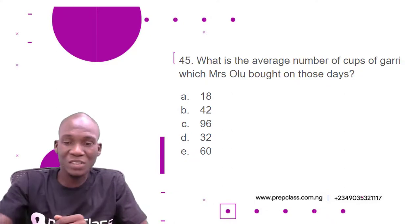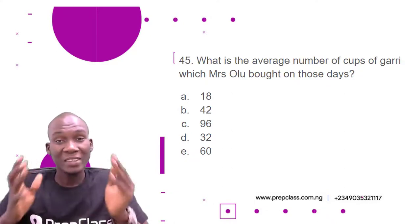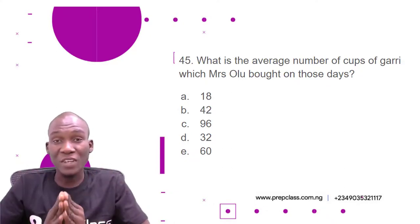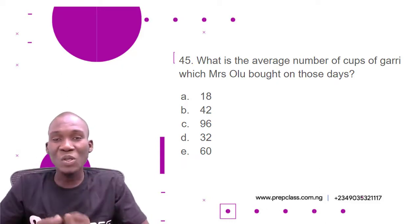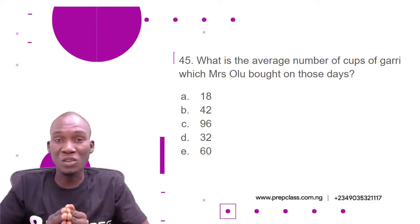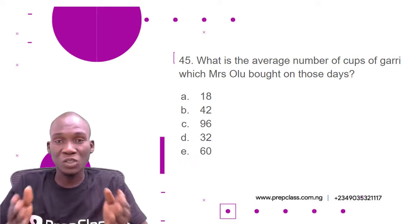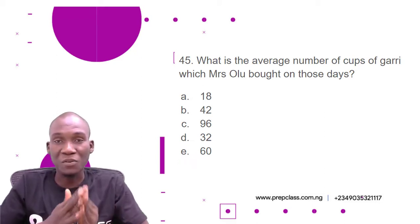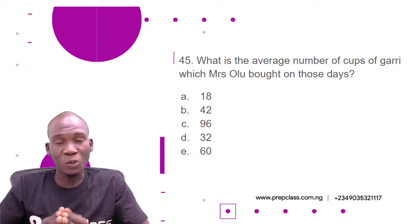These questions are quite easy and straightforward because all we need to do is get our information from the graph, then perform any required operation. If no operation is needed, we simply pick our answer directly from the graph. Now let's look at the last question.